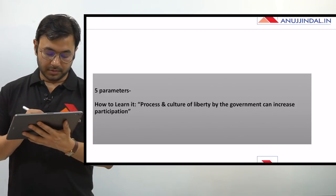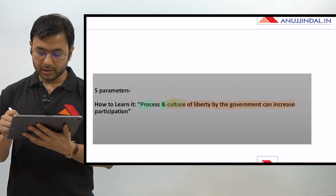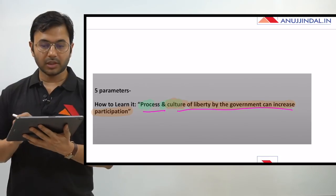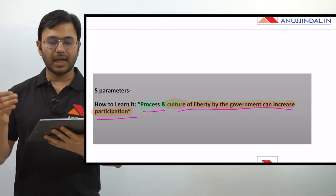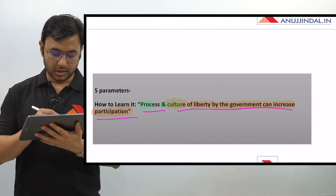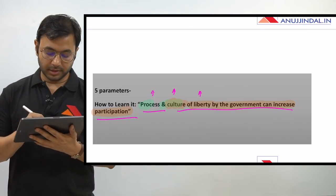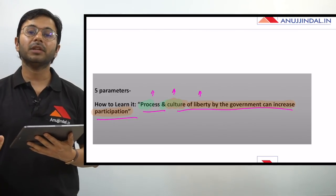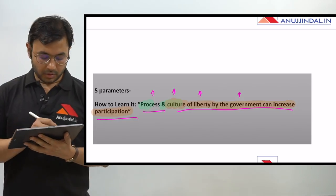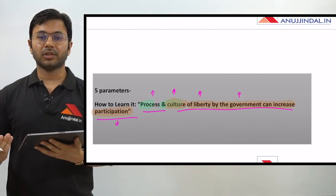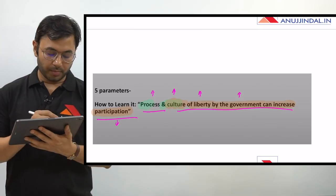What are these five parameters and how to learn them? The acronym to learn them is very simple: 'Process and culture of liberty by the government can increase participation.' Process stands for the electoral process. Culture stands for political culture in the country. Liberty stands for civil liberties - the level of civil liberties provided to the people. Government stands for functioning of the government. Participation stands for political participation - what kind of participation is enjoyed by the people in the country when it comes to politics.